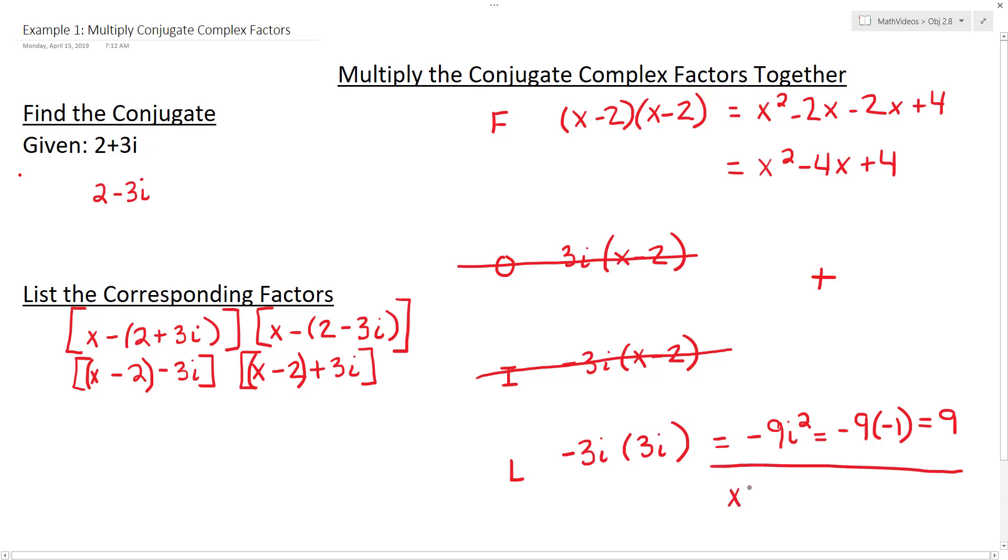we are left with x squared minus 4x plus 13, which is considered an irreducible quadratic because it's not able to be reduced over the real numbers.